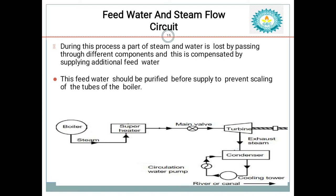Water is taken from a river and sent to the boiler with the help of a feed water pump. Before entering the boiler, the water first passes through the economizer for preheating. After the flue gases flow through, the water is converted into vapor. After the vapor is produced, we cannot directly send it to the turbine. Before reaching the turbine, the steam is sent to the superheater, which is used to remove moisture from the steam.